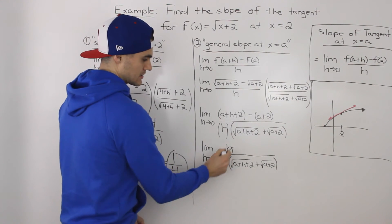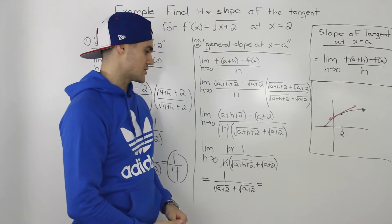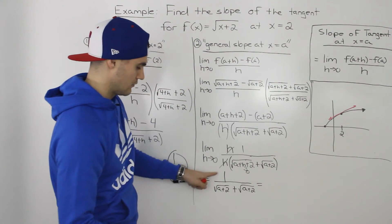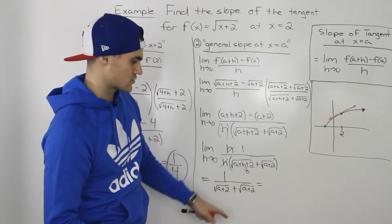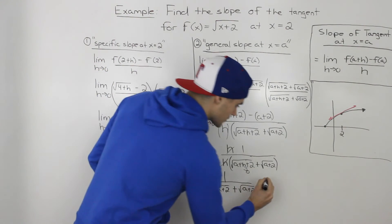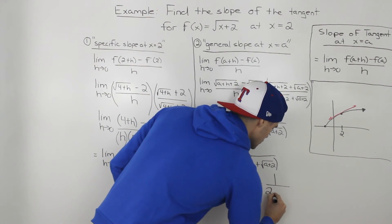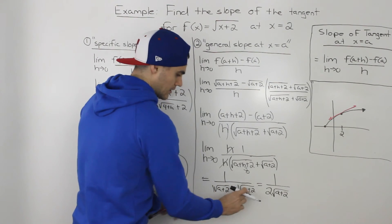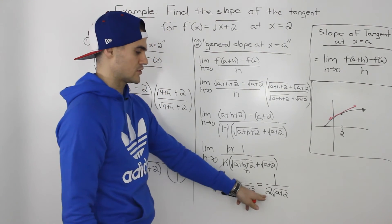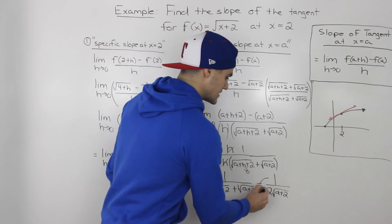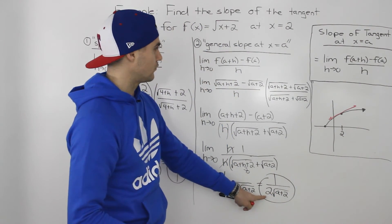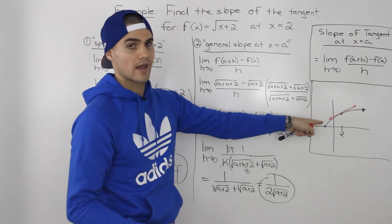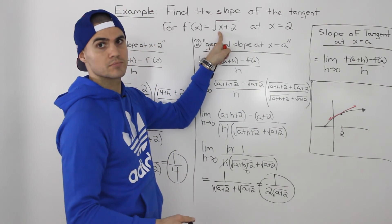The h's cancel out and we're left with 1. Since the h's cancel we can plug in 0 for h, leaving 1 over the square root of a plus 2 plus the square root of a plus 2. Those are like terms, so we simplify to 1 over 2 times the square root of a plus 2, since each radical has a coefficient of 1 and adding them gives 2. This is the general formula for the slope of the tangent at any x value a for the function the square root of x plus 2.